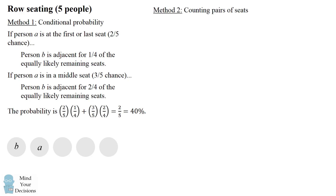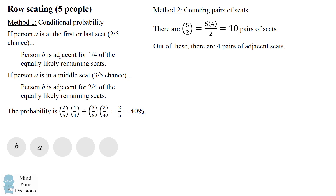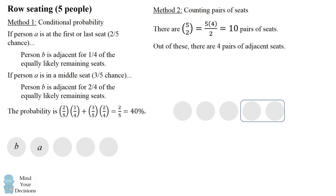Another way is to count the pairs of seats. There are five choose two, which is ten pairs of seats. How many of these are adjacent? There are four pairs of adjacent seats, because the first, second, third, and fourth seats can each be paired with the seat after it. Therefore there are four out of ten possibilities, which also equals 40 percent.